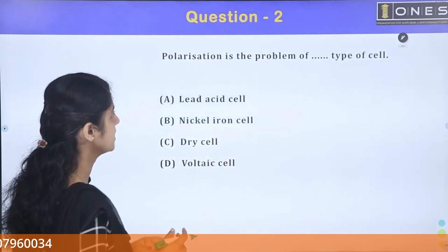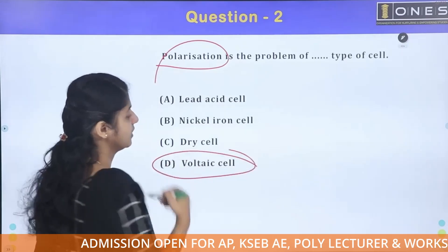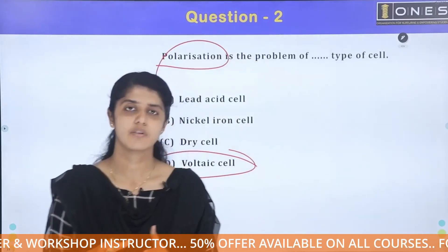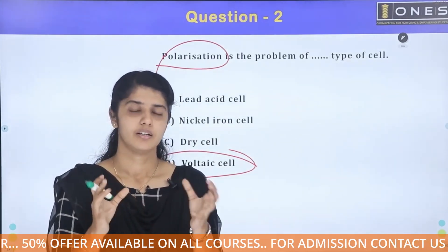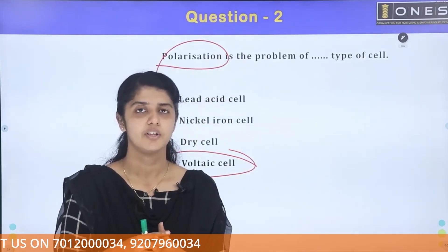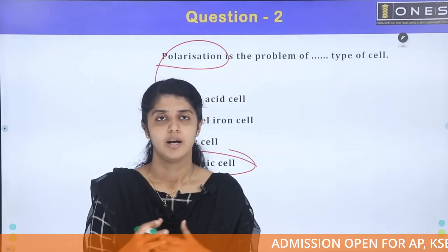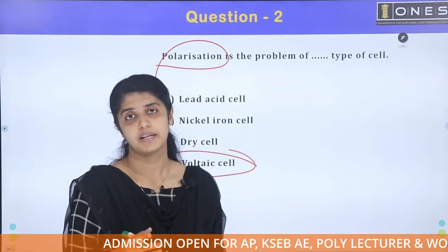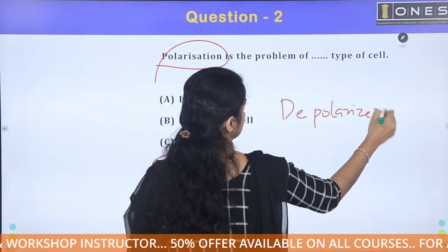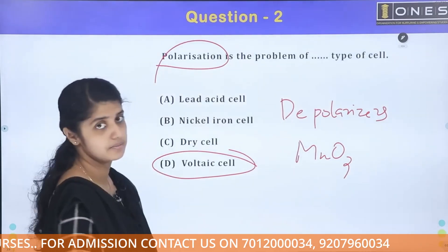Second question: polarization is a problem of which type of cells? Polarization is an issue for electrochemical cells. During electrolysis, hydrogen and oxygen gases are formed, which reduces the actual EMF and current output of the cell. This problem is called polarization, and to overcome it we use a depolarizer — for example, MnO2 (manganese dioxide).